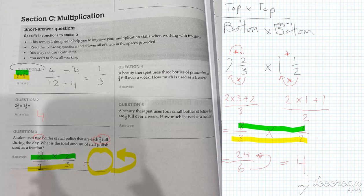For question 4, we've got the same sort of thing here with 3 bottles at 3 quarters. So just remember whole numbers need to go over 1. Give that one a go. And then for question 5, we've got the same thing, 4 small bottles of lotion that are 1 third full. So same thing, a whole number goes over 1. And I'll let you do those and we'll see what we get.